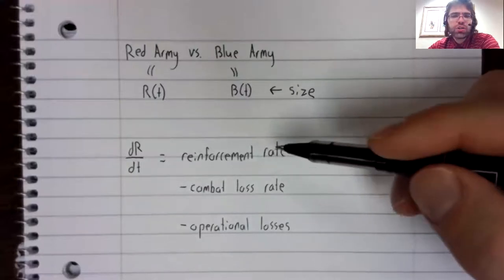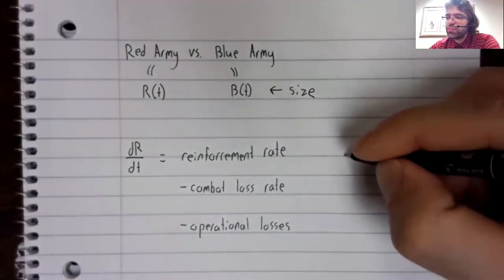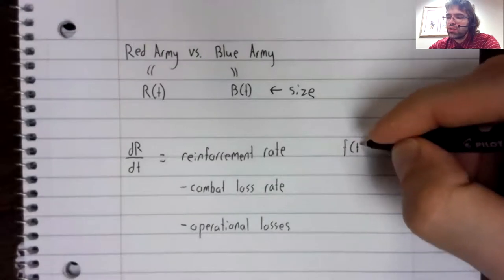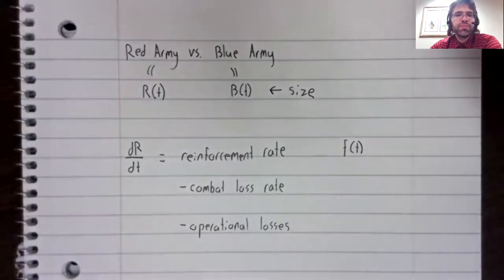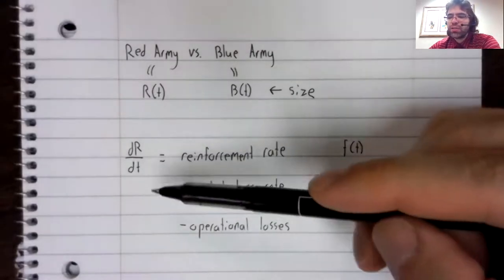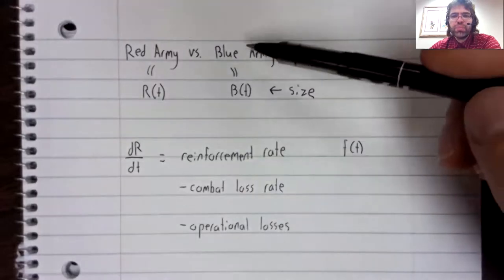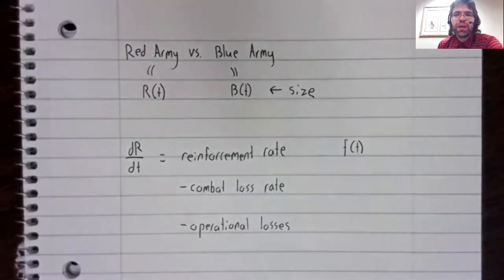We can't say a lot about the reinforcement rate. It can just be a function of time. The combat loss of Red Army depends on Blue Army. And it depends on two factors.